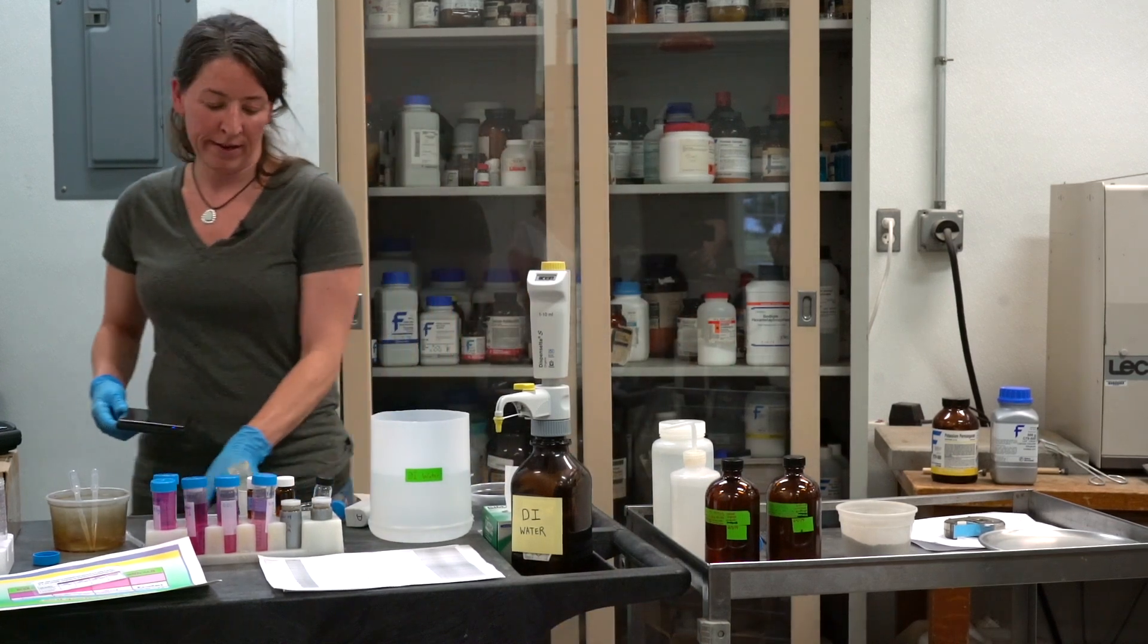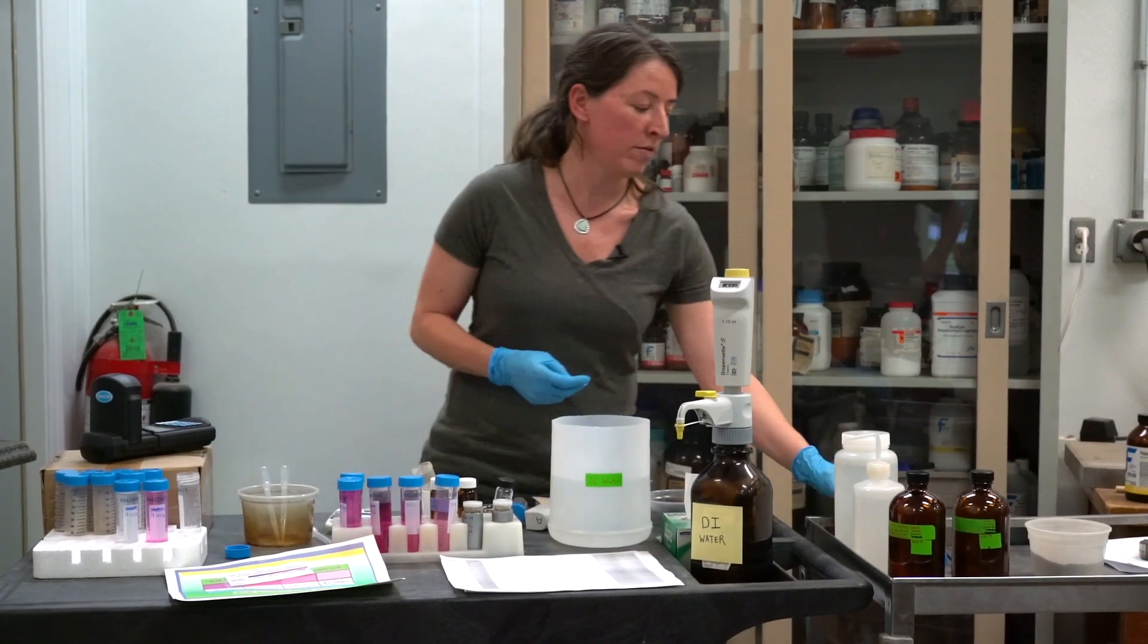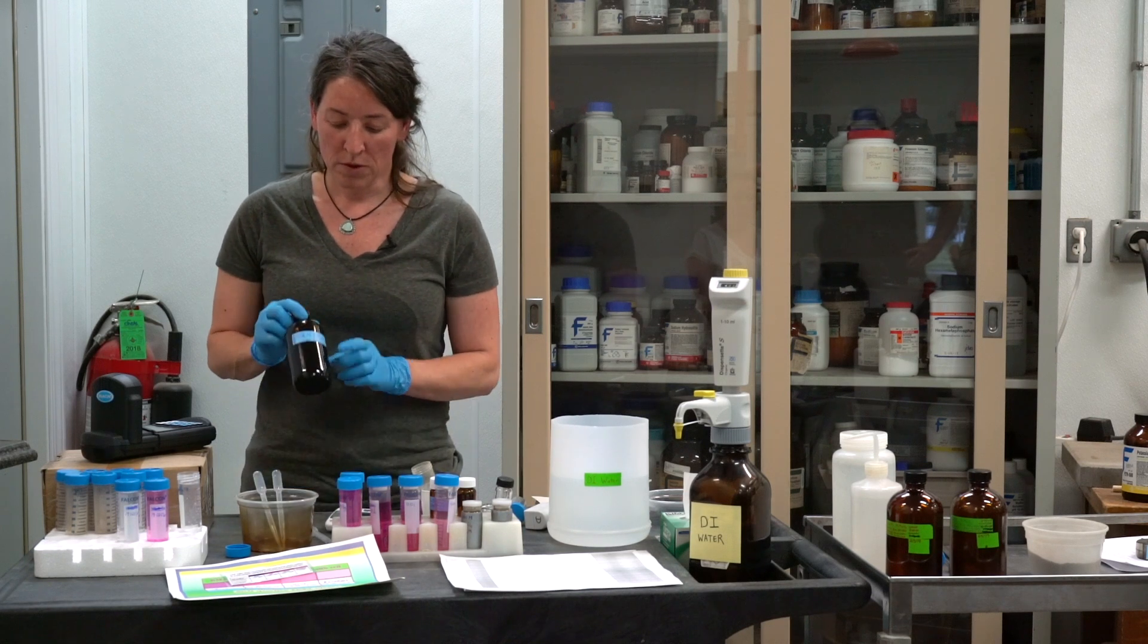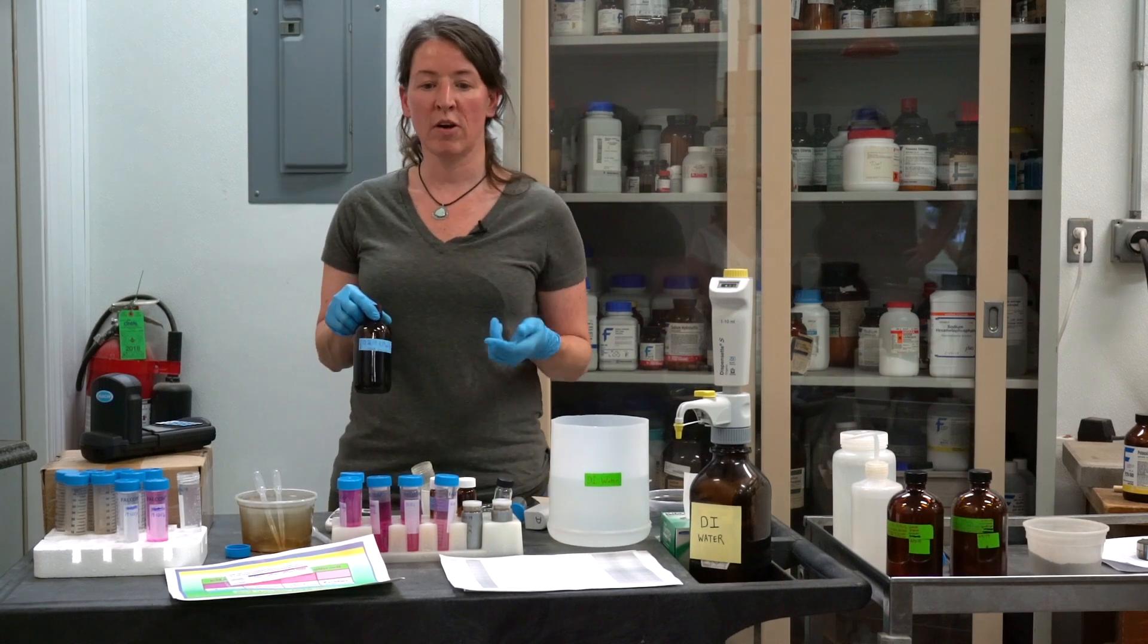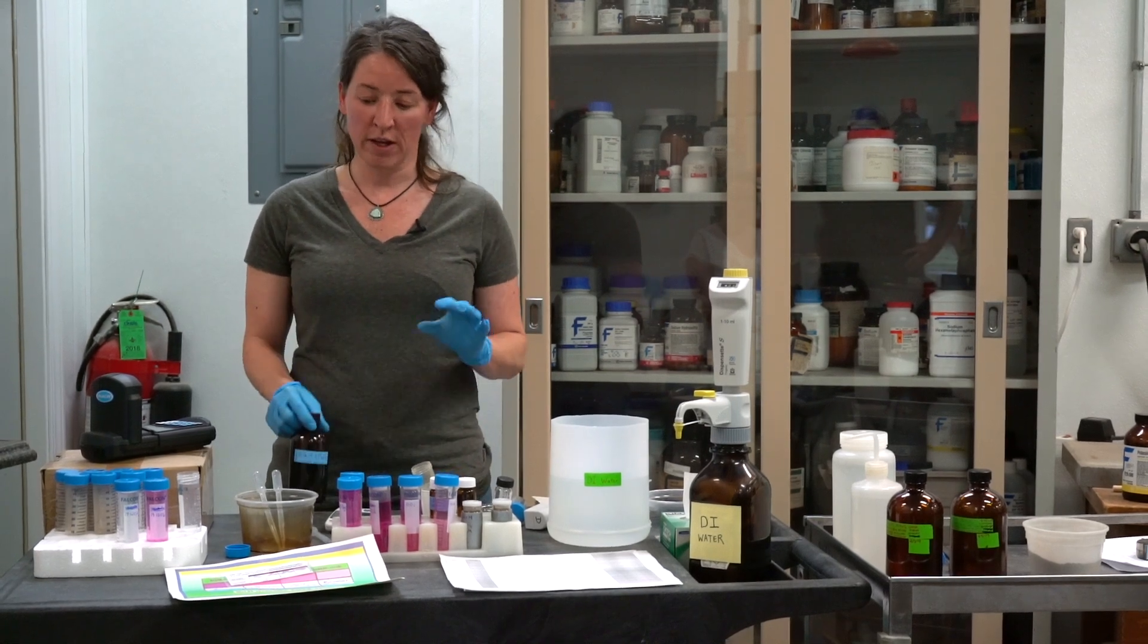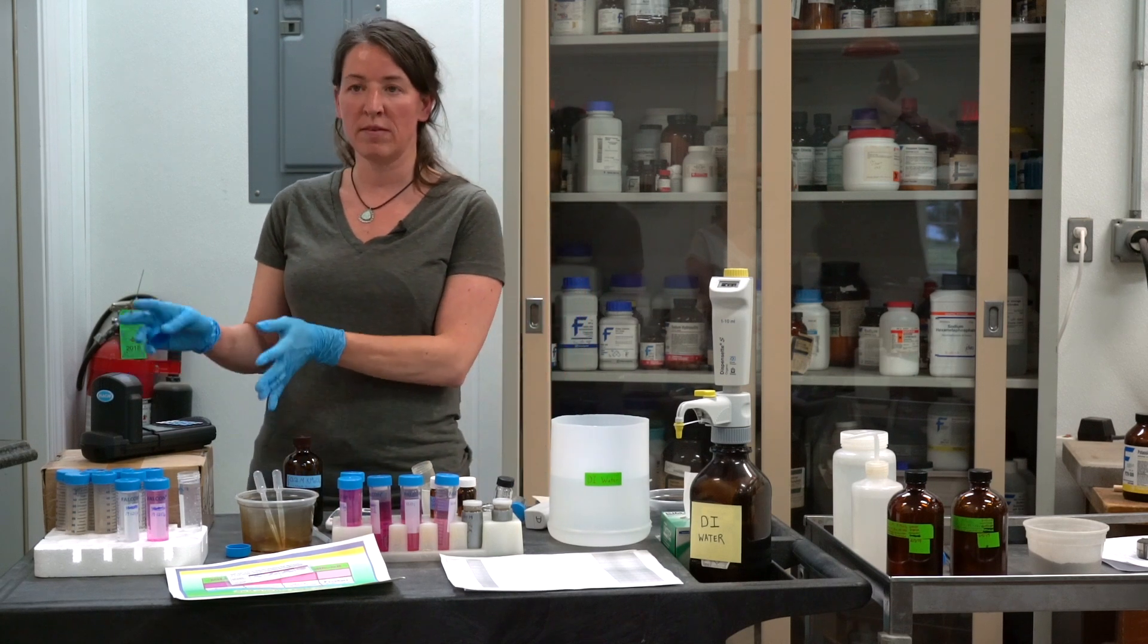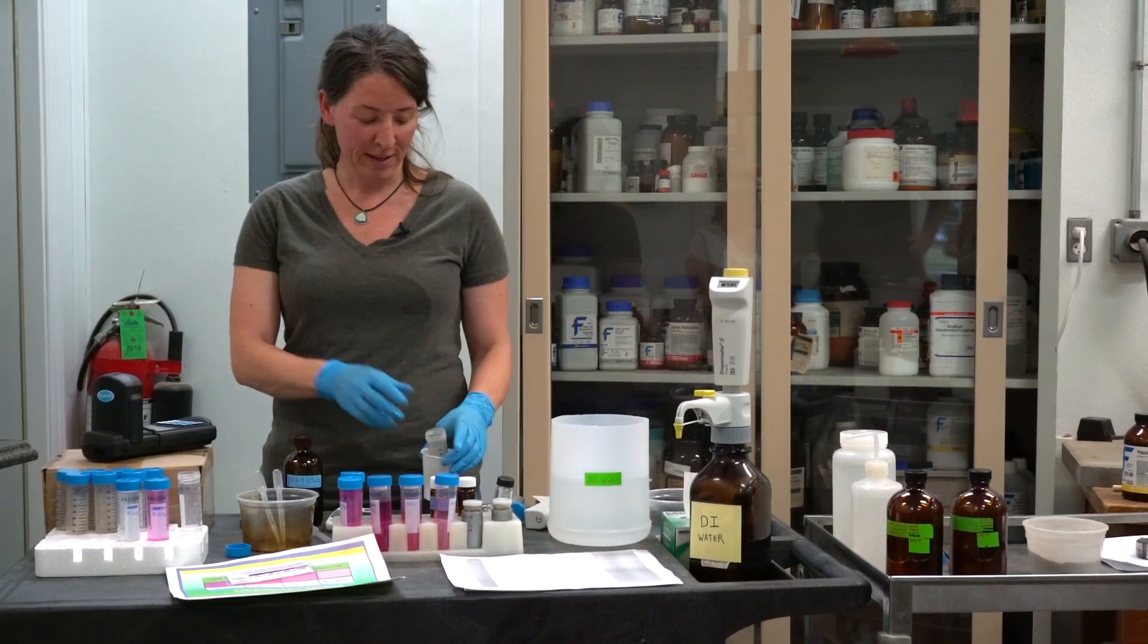The next step, we're going to add 18 milliliters of deionized water, and then 2 milliliters of our stock potassium permanganate solution that we made beforehand. The important thing about this potassium permanganate is once it touches the soil, the reaction starts. So it's a timed reaction. You need to make sure that you're organized. When you add it, the first step is 2 minutes, second step is 10 minutes. So as soon as you add the potassium permanganate, time starts. So I add that last.